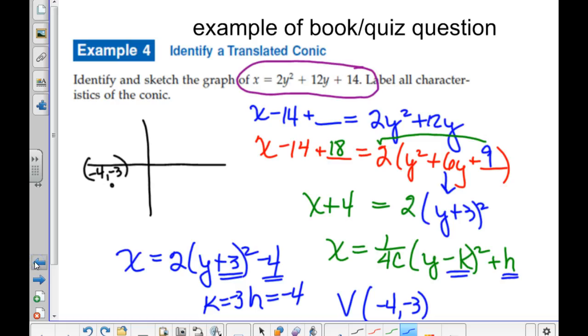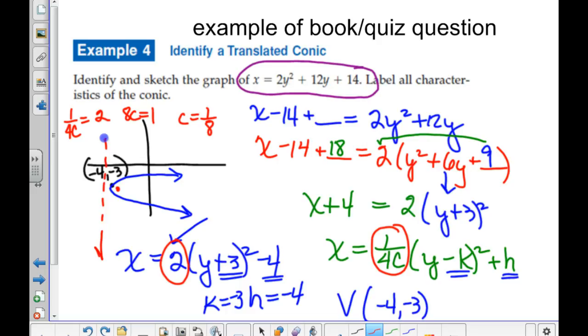Back to this question. This has a 2. It's going... Is this one opening up and down? No, we knew that, because it had X by itself, and because Desmos said it, right? But it is a sideways parabola, but the 2 still makes it skinny. Now, when it says label all characteristics of the conic, it wants focus and directrix for a parabola. How can we find focus and directrix?